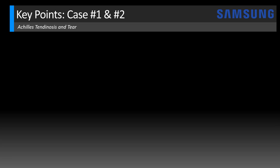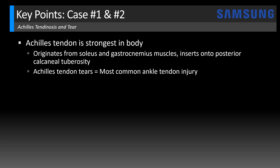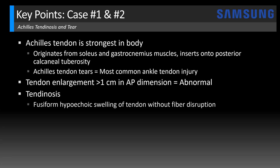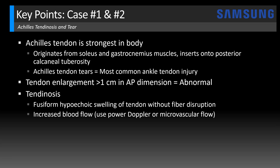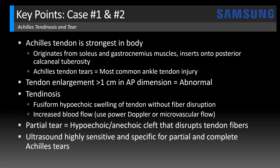Key points for cases one and two: The Achilles tendon is actually the strongest tendon in the body. It originates from the soleus and gastrocnemius muscles and inserts onto the posterior calcaneal tuberosity. Achilles tendon tears are the most common ankle tendon injury. Tendon enlargement greater than one centimeter in AP dimension is abnormal. Tendinosis can be diagnosed when you see fusiform hypoechoic swelling of the tendon without fiber disruption, and you'll often see increased blood flow — use power Doppler or microvascular flow imaging to increase sensitivity for hyperemia detection. A partial tear can be diagnosed when there's a hypoechoic or anechoic cleft that disrupts the tendon fibers. Ultrasound is highly sensitive and specific for both partial and complete Achilles tears.